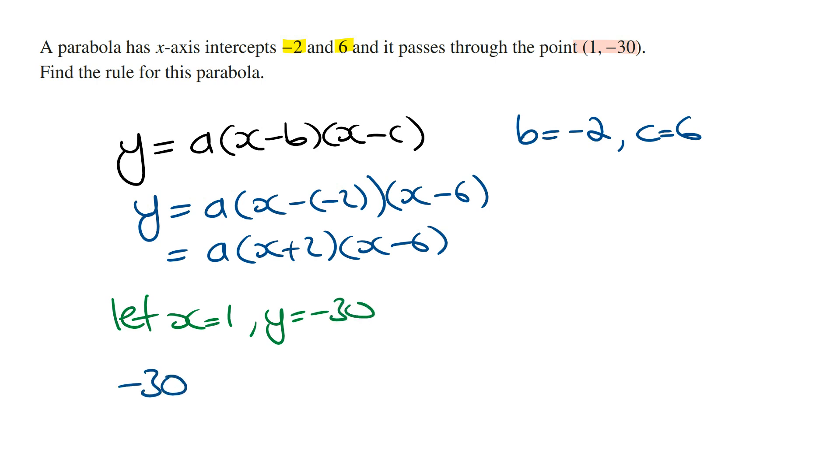And so we can say that -30 = a(1 + 2)(1 - 6). And so -30 is going to equal a(3)(-5).